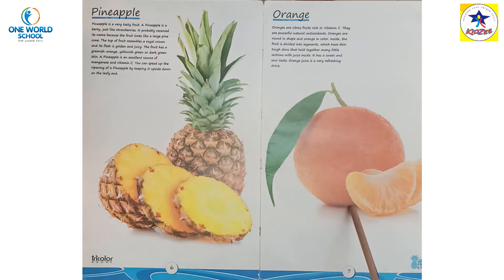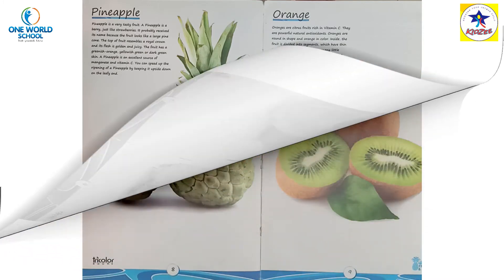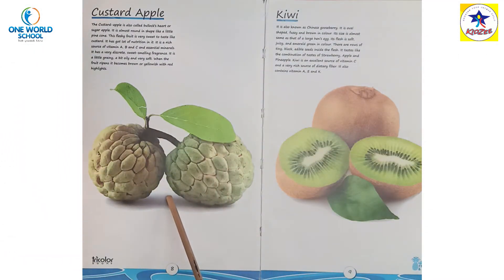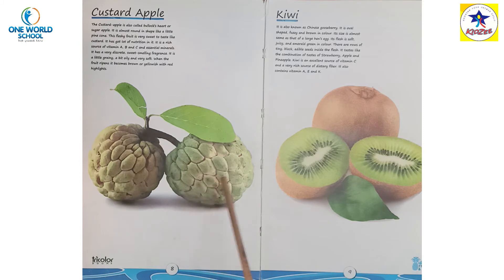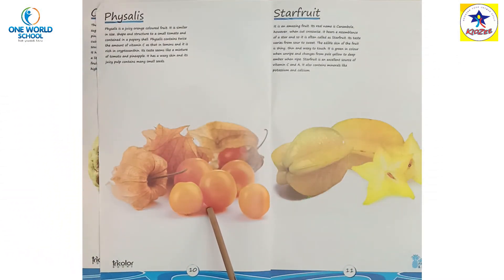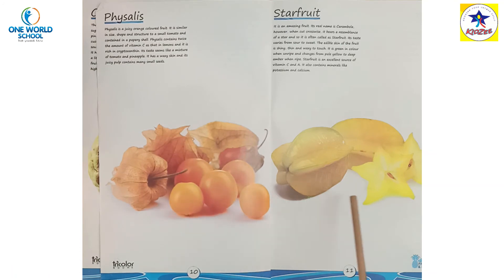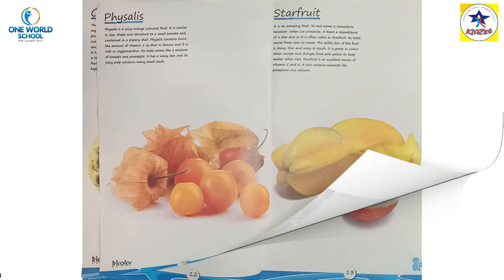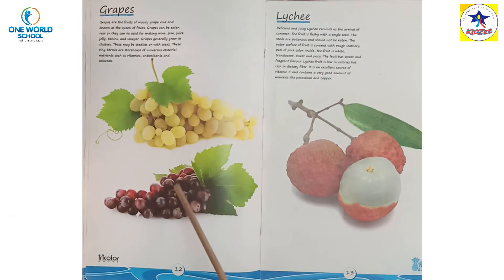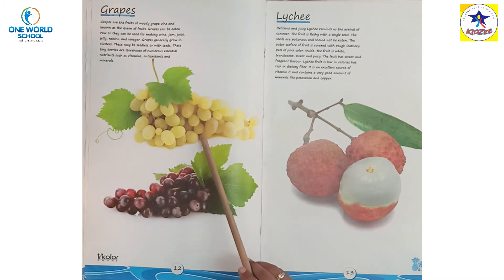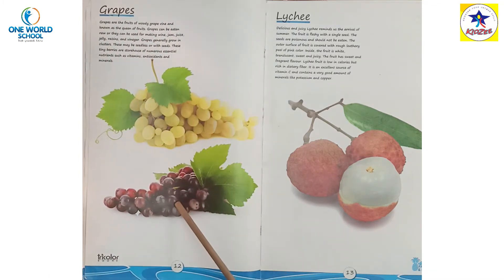Then orange — orange in orange color. Custard apple — custard apple में small small बहुत सारे seeds होते हैं, green color होता है। Kiwi — everyday खाना है, बहुत healthy होता है। यह है fistles. Star fruit — star shape होता है, हम उसे cut करेंगे तो star shape हो जाता है, इसीलिए इसको star fruit बोलते हैं, yellow color। Then small small kids का favorite — grapes — green color भी होता है, purple color भी होता है।